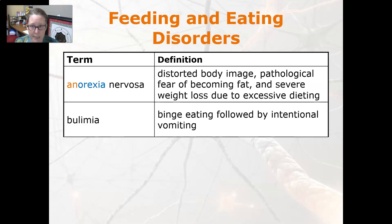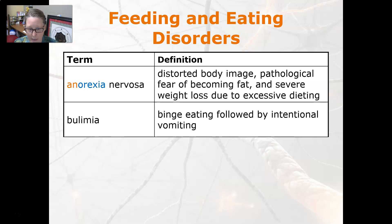Feeding and eating disorders: anorexia nervosa is a distorted body image, a pathological fear of becoming fat, and severe weight loss due to excessive dieting or vomiting. Bulimia is binge eating followed by intentional vomiting — the cycle is eating and then purging to avoid gaining weight.